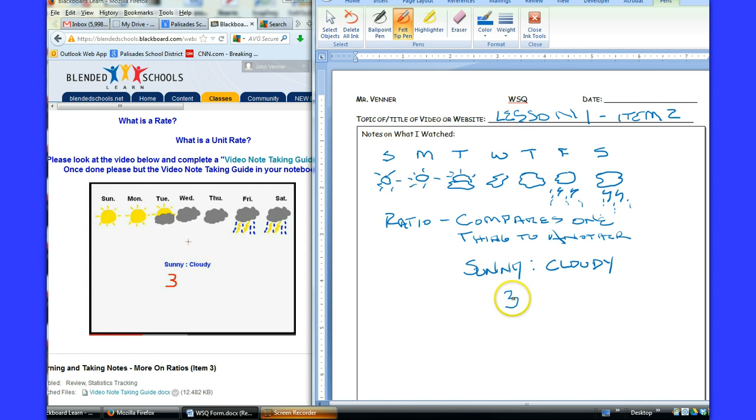If we go back up and find how many cloudy days we have, we have one, two, three, four, five days that are going to have some clouds in them. So our ratio of sunny to cloudy days is three to five. See how that differs from probability?